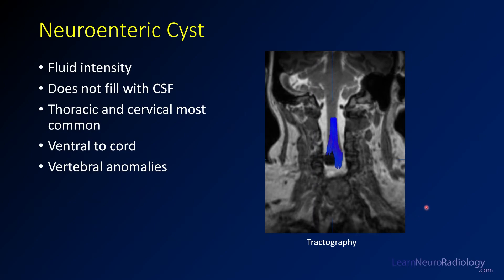This is a neuroenteric cyst. Neuroenteric cysts are fluid-intensity lesions that occur within the neuroaxis. They are not filled with CSF and should not communicate with CSF. The most common locations are anterior to the brainstem or in the ventral components of the thoracic and cervical spine. They are often associated with vertebral anomalies. Superimposed tractography from this patient shows how the spinal cord fibers are displaced and splayed apart by this extra-axial lesion.